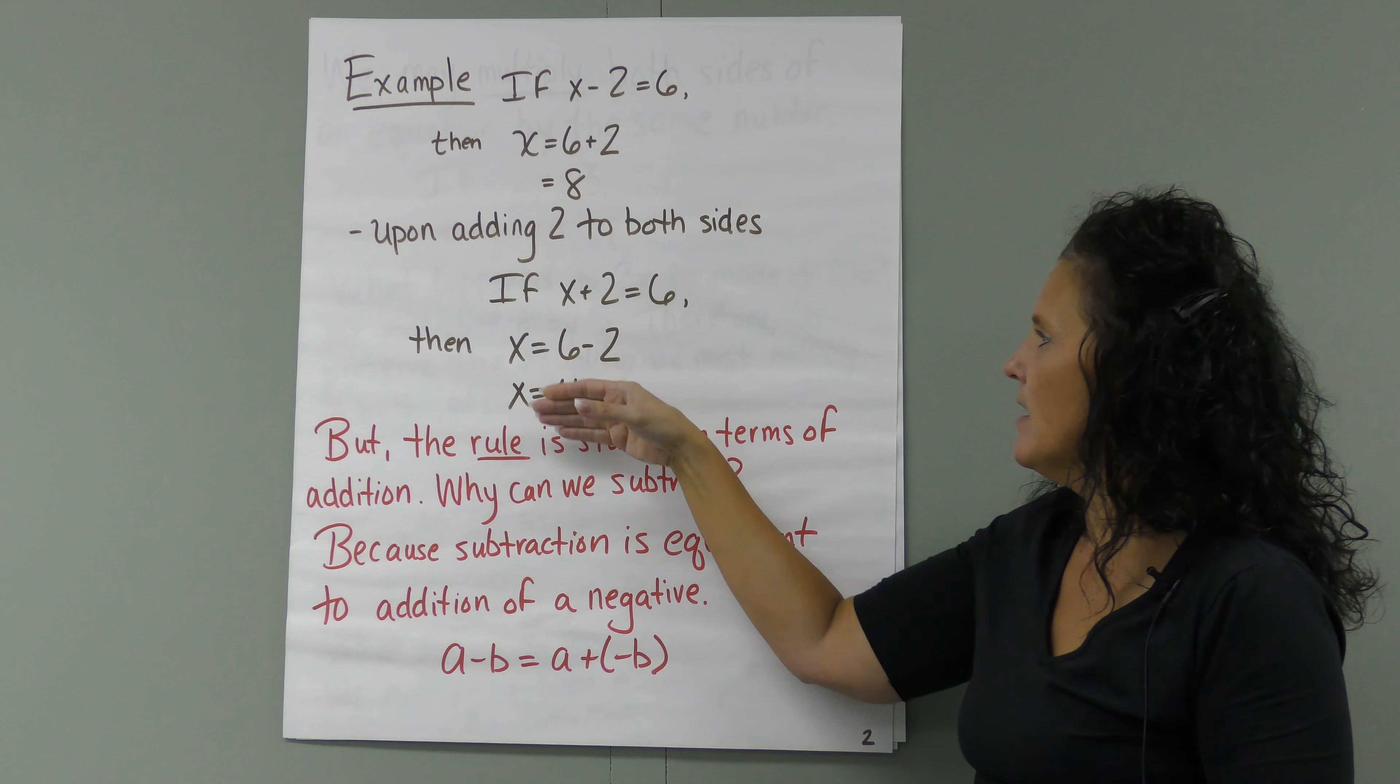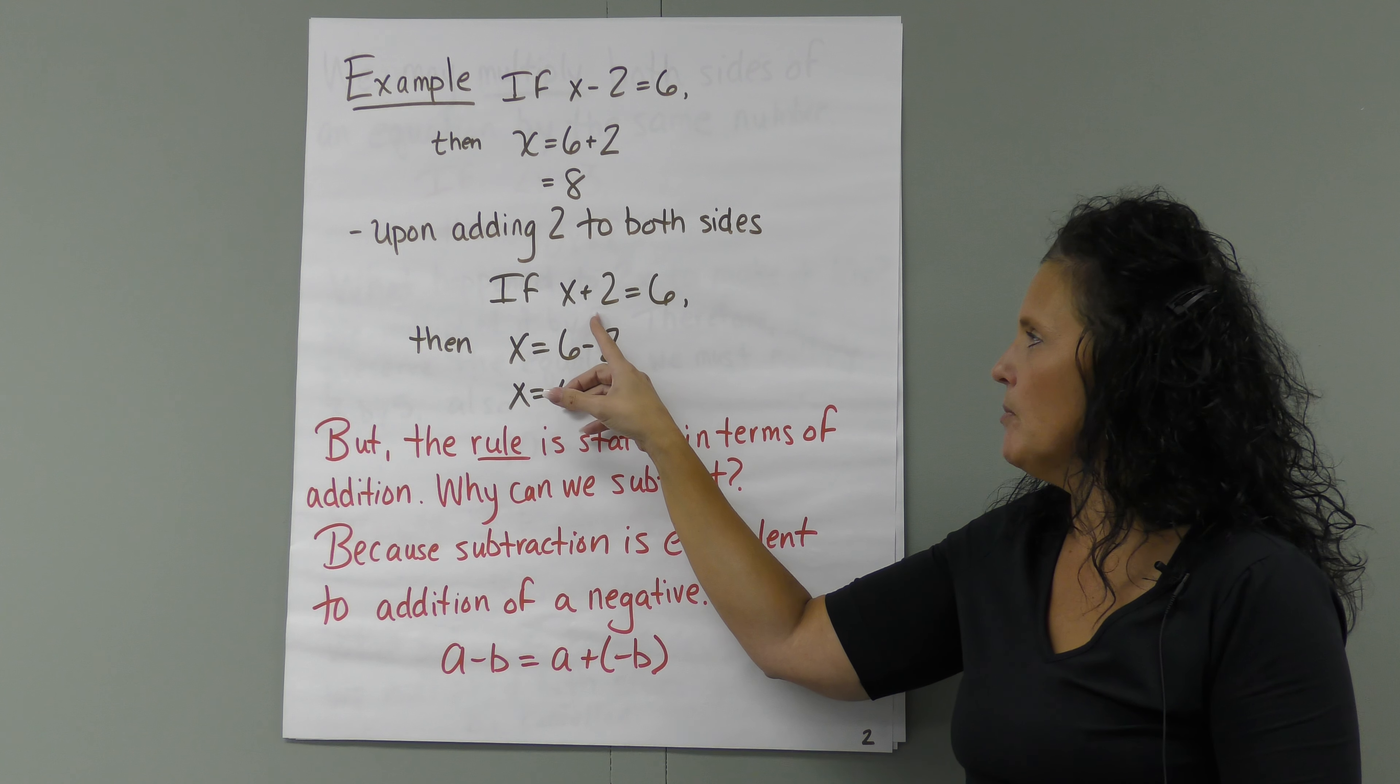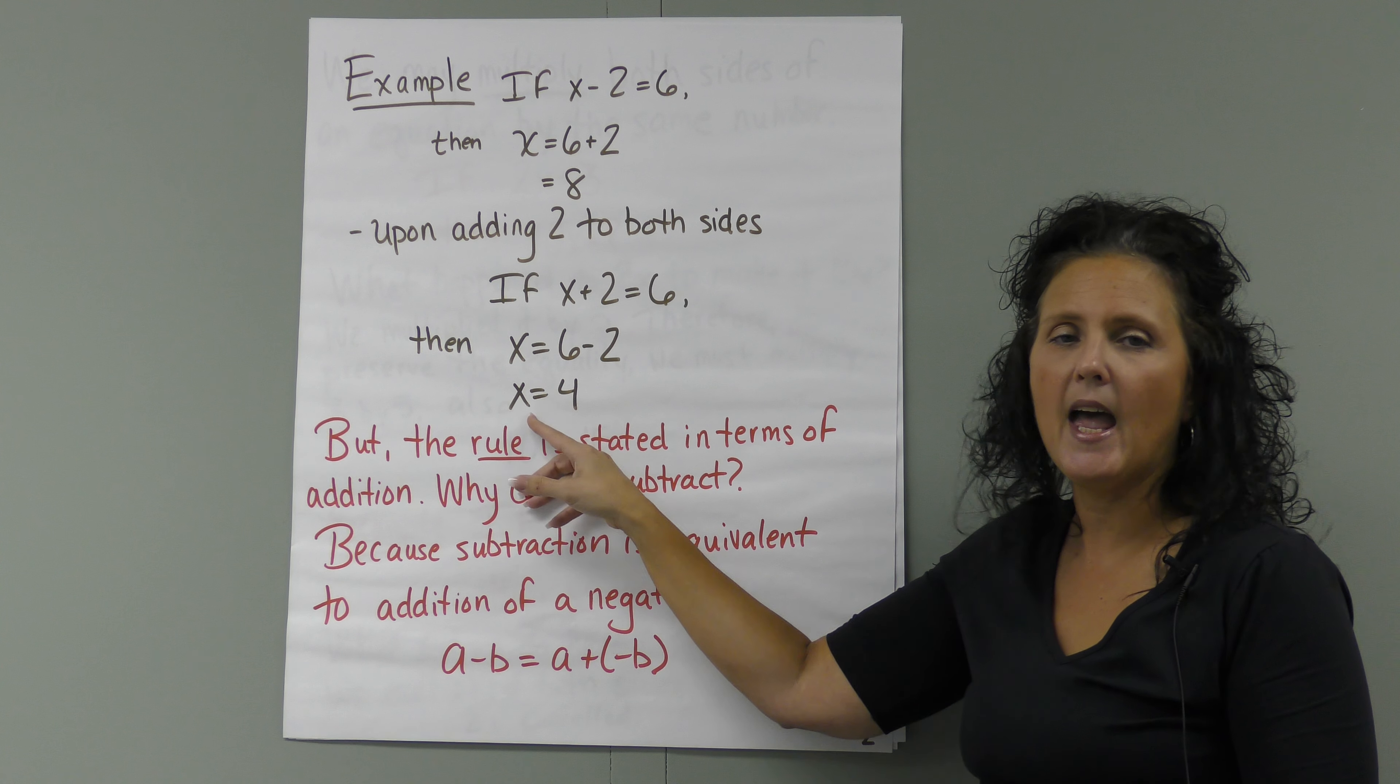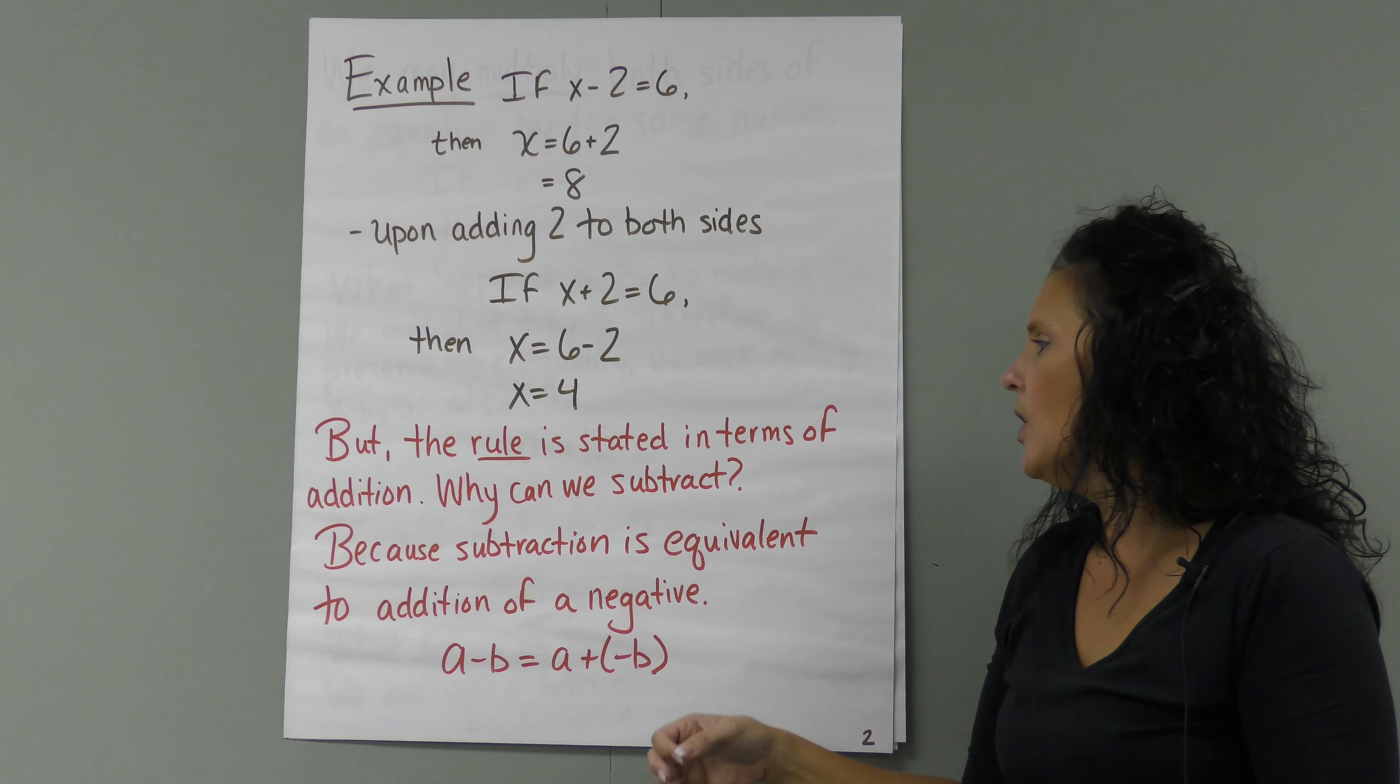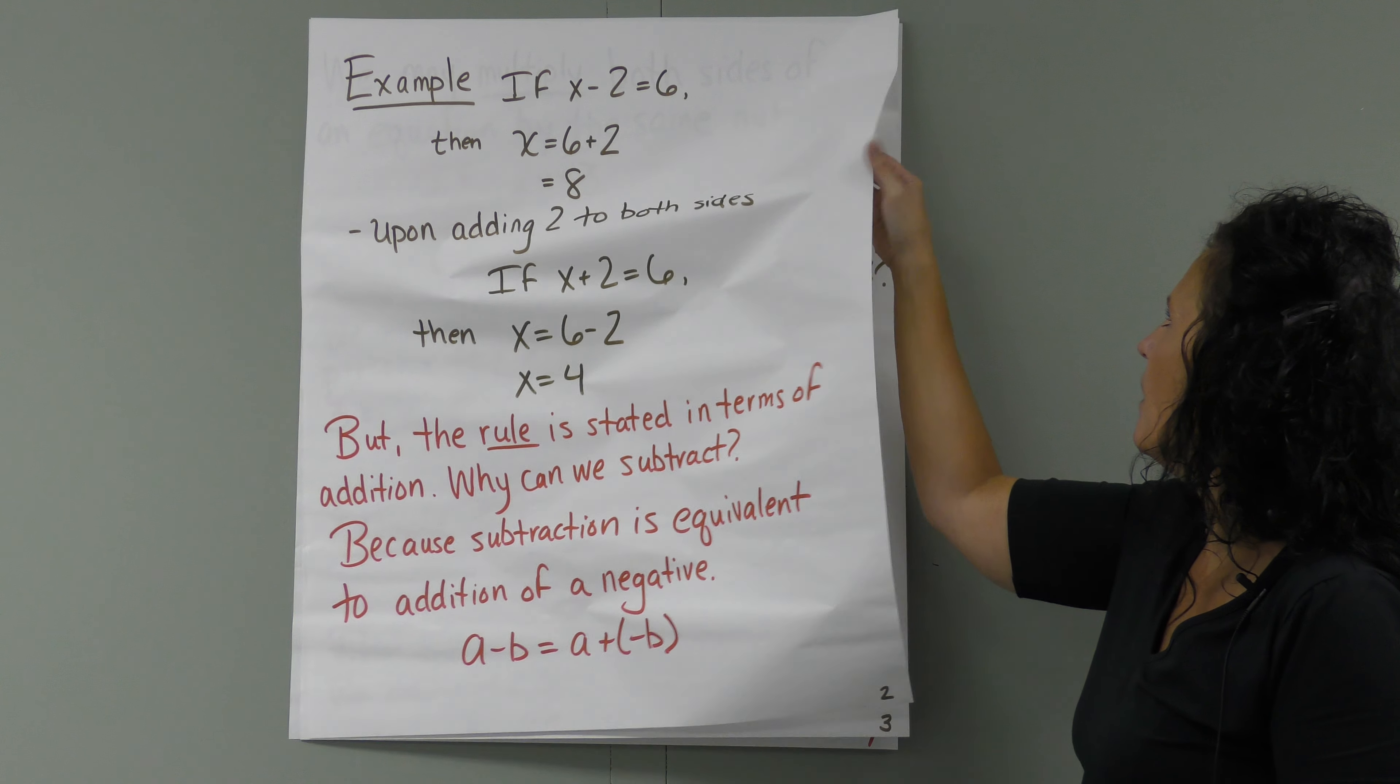We could do it the opposite way as well. If X plus 2 is equal to 6, we have to subtract 2 in this instance because we want 0. So we subtract 2. If we did it to this side, we have to do it to this side. So we have X by itself. Now we have 6 minus 2 on this side. X equals 4. But the rule is stated in terms of addition. Why can we subtract here if the rule is an additive rule? Because subtraction is equivalent to the addition of a negative. That's essentially when we add a negative, we're subtracting.